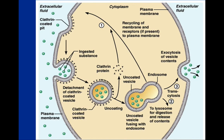Endocytosis begins with the cell membrane invaginating to bring certain substances into the cell. This is caused by clathrin proteins that flex and start forming a little bubble that buds off of the membrane, collecting substances outside of the cell. Eventually, the cell membrane fuses and we have a vesicle inside of the cell. Once inside, this vesicle can fuse with other vesicles, lysosomes, or endosomes, or be transported across the cell in a process known as transcytosis. Exocytosis looks just like endocytosis in reverse — taking a vesicle, fusing it to the cell membrane, and releasing contents out of the cell.